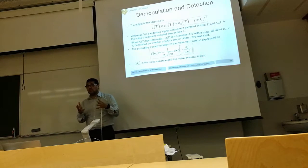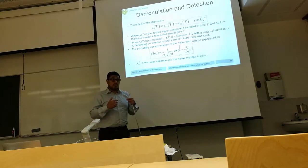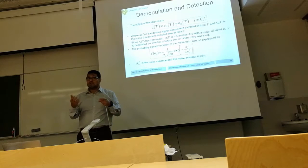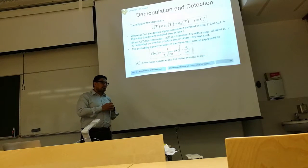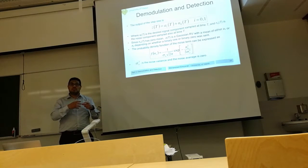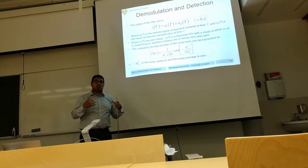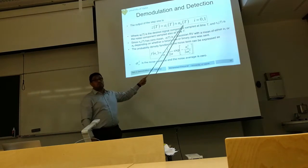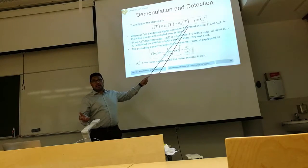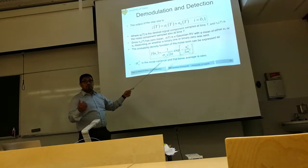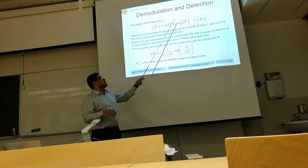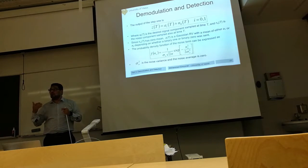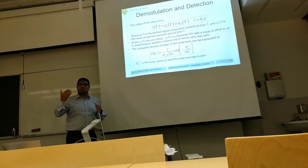The noise is generated internally by the receiver itself, because every element and component in the receiver generates noise. Every conductor and resistor has thermal noise, and every semiconductor has shot noise. We have several types of noise that sum up to give a Gaussian distribution. We have nothing to do about this — it is already there. We should try to find the optimum threshold value in the presence of this noise, and also determine the impact of this noise on the probability of error.